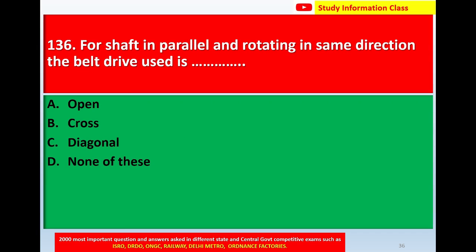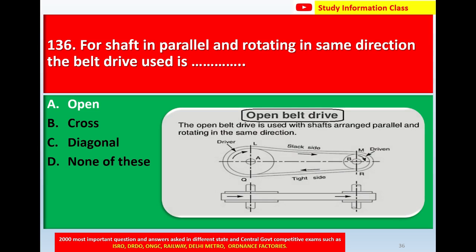Question number 136: For shafts arranged parallel and rotating in the same direction, the belt drive used is — option A open, option B cross, option C diagonal, option D none of these. The correct answer is option A: open belt drive.